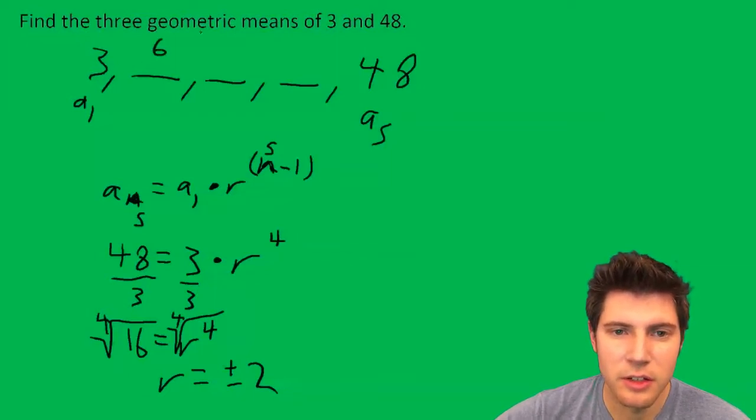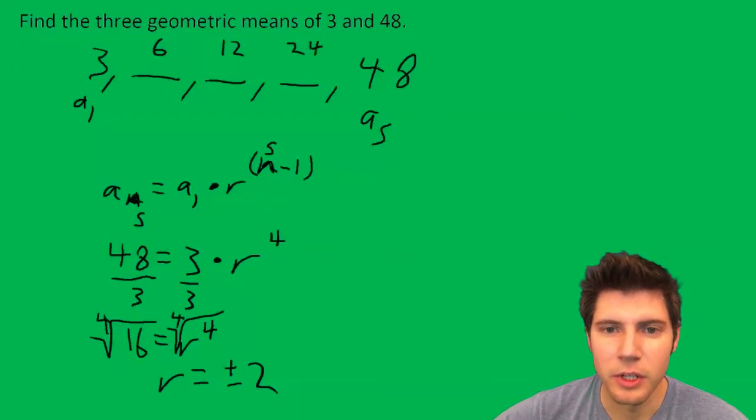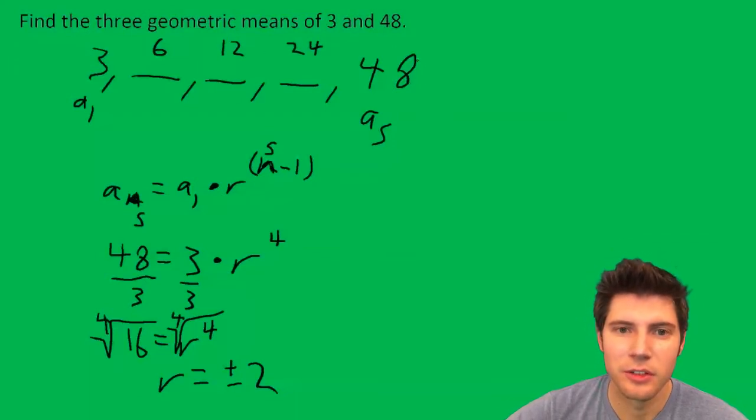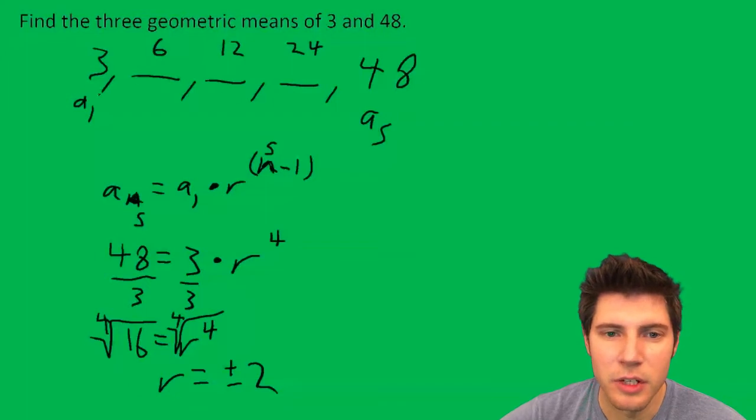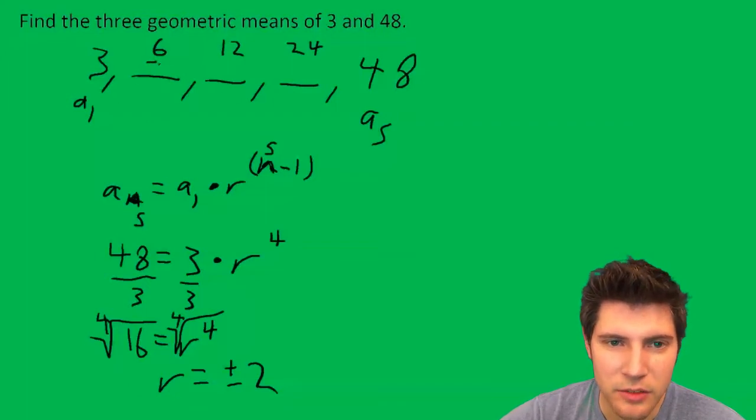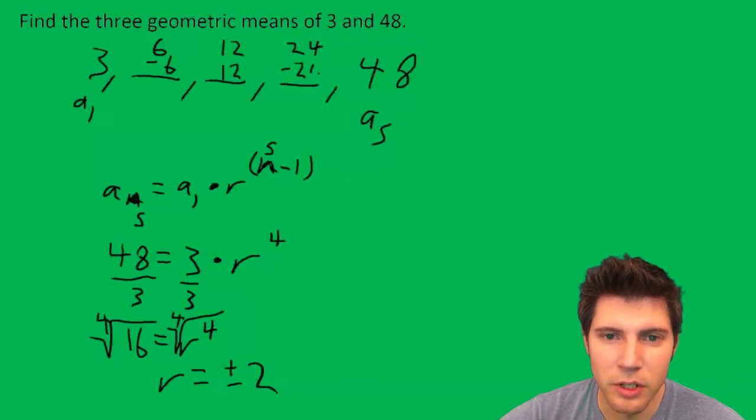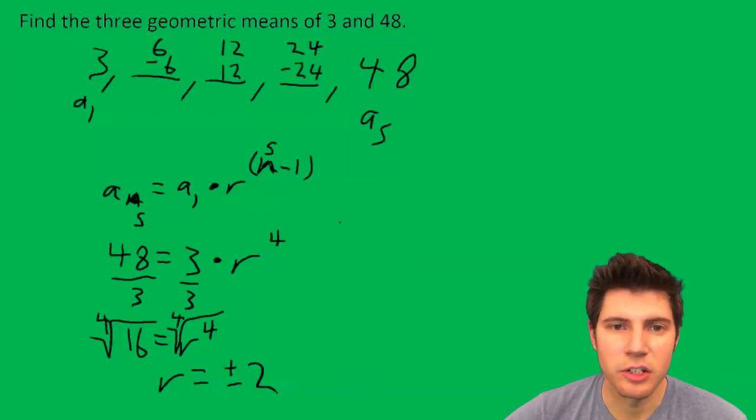Let's try 2 first. So multiply by 2, I get 6, 12, 24, and then 48. So that works. That is one set of them. Let's try negative 2: negative 6, positive 12, negative 24, and 48. So there's actually two sets of three geometric means.